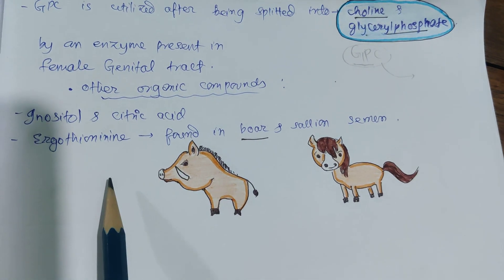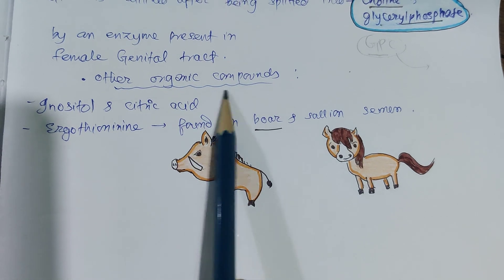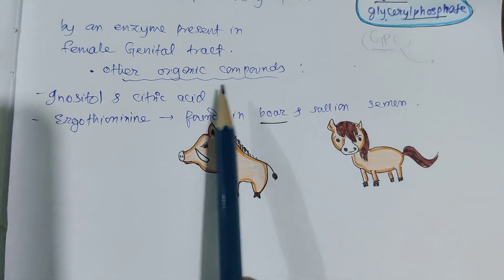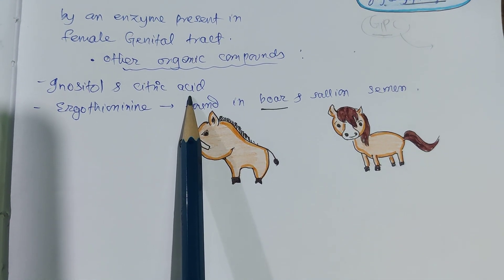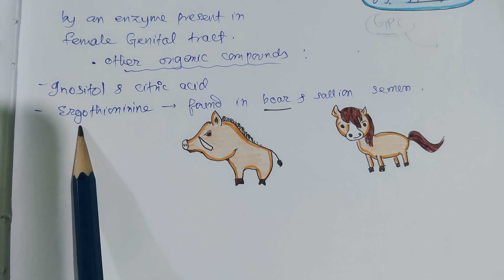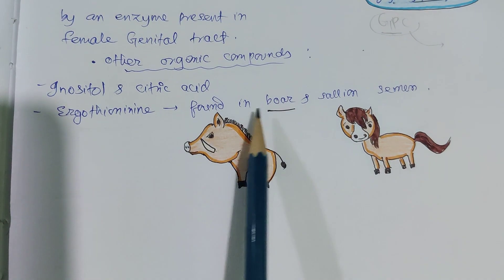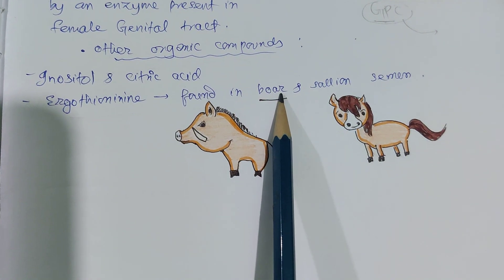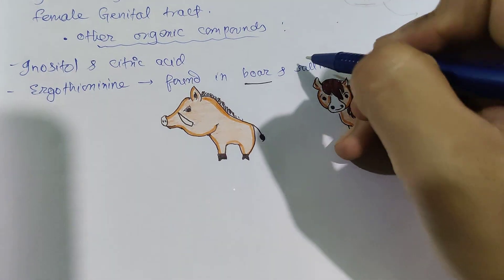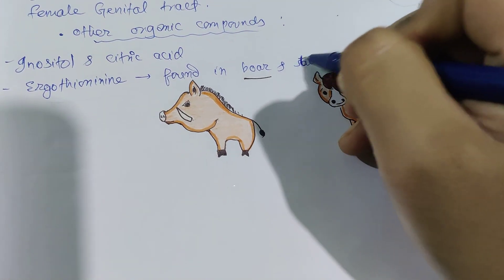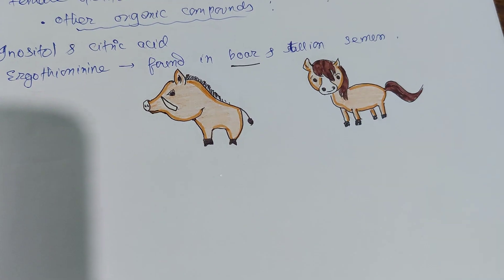Other organic compounds in seminal plasma include inositol, citric acid, and ergothionine. Ergothionine is found in the boar and stallion.